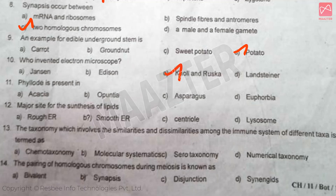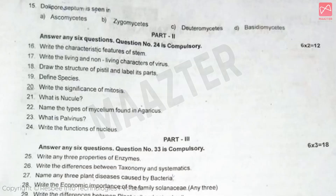Phyloid is present in — Answer is option A. Major site for the synthesis of lipid — Answer is option B. The taxonomy which involves the similarities and dissimilarities among the immune system of different taxa is termed as — Answer is option C. The pairing of homologous chromosomes during meiosis is known as — Answer is option B. 24 September is seen in — Answer is option D.